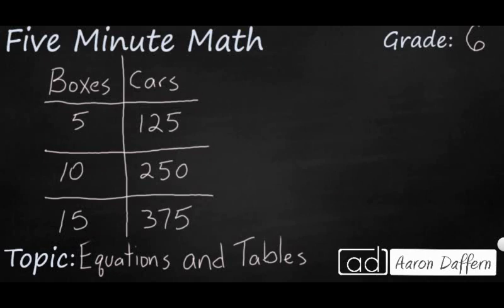Now it's time for you to try. We have a new table here with boxes and cars. Five boxes has 125 cars, ten boxes has 250, and 15 has 375. See if you can figure out which one is the dependent variable, which one is the independent variable, and write an equation to show the relationship. When you have your answer, unpause the video and check your work.